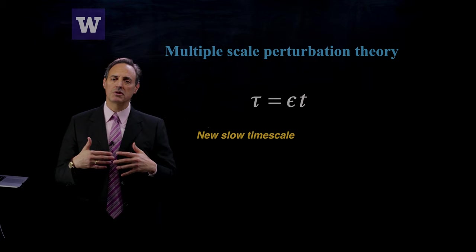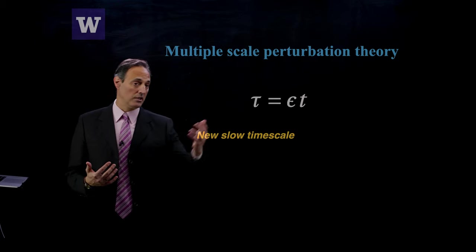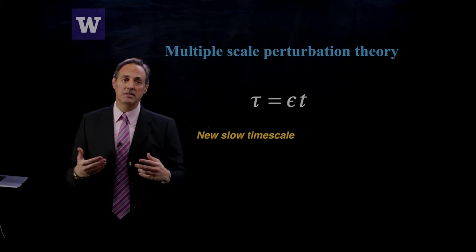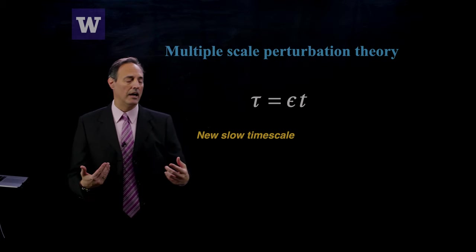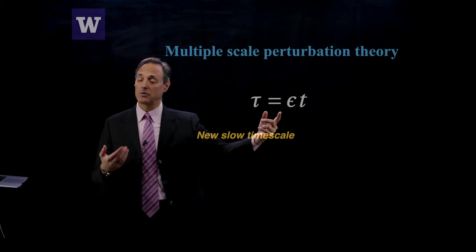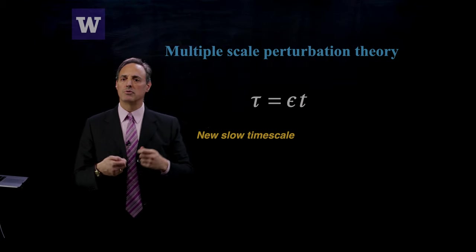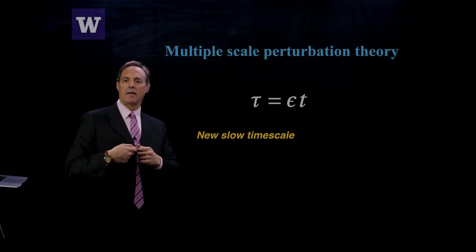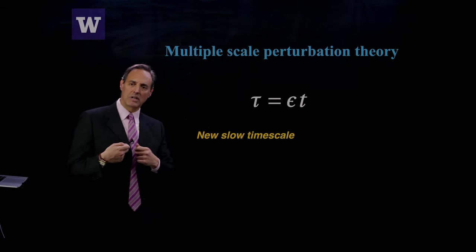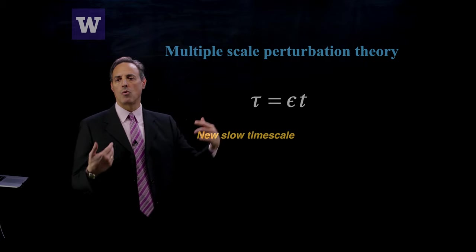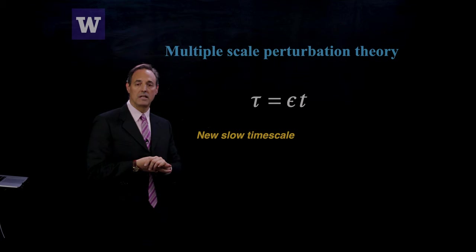The idea behind a multiple scale expansion is pretty simple. It's to introduce a new time scale, let's call it tau, and tau is epsilon t. This is a slow time scale. If t goes from 0 to 1 and epsilon is 0.1, then tau goes from 0 to 0.1. So it's a way of saying I've got this slow time scale, so this t has to change a lot for tau to change an order 1 amount.